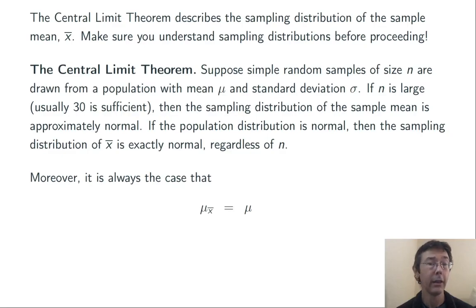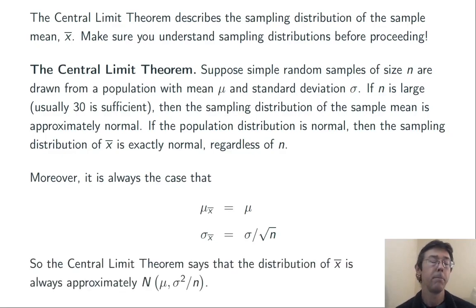Moreover, it's always the case that the mean of x-bar is μ, and the standard deviation of x-bar is σ over the square root of n, where the mean and standard deviation of the population are μ and σ respectively. In short, the central limit theorem is saying that regardless of what population you're sampling from, if the sample size is large enough, the distribution of the sample mean x-bar is going to be approximately N(μ, σ²/n).